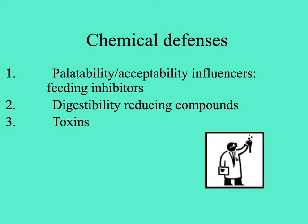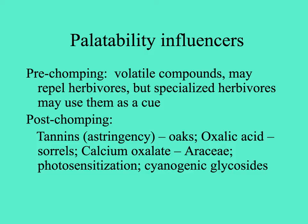Chemical defenses are extremely diverse. We can divide them into three categories: those that influence the palatability or acceptability of foliage, including things that inhibit feeding; digestibility-reducing compounds; and toxins. Before an herbivore takes a bite, its choice might be influenced by volatile compounds. Interestingly, each group of plants with volatile compounds tends to have a group of specialized herbivores that use those volatiles as a cue for finding the plants.